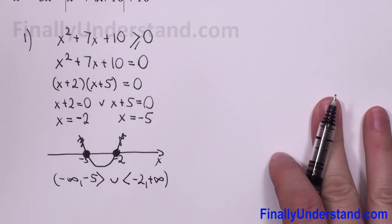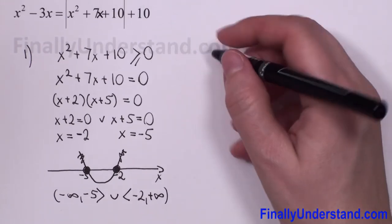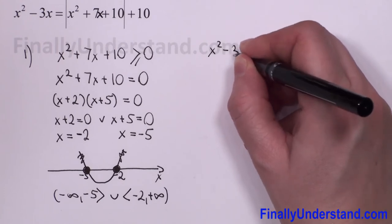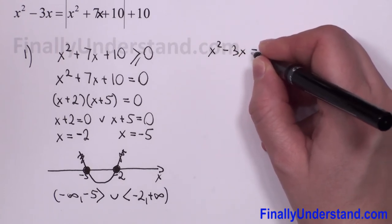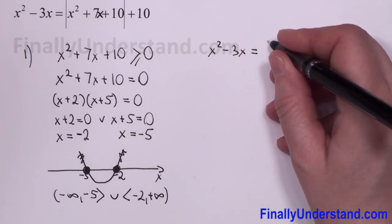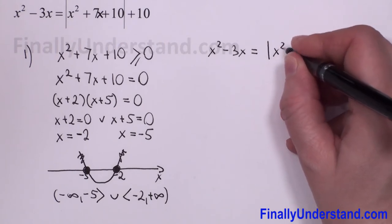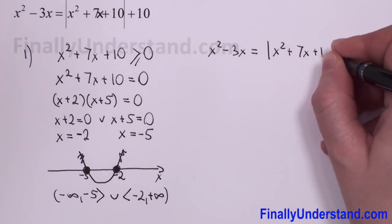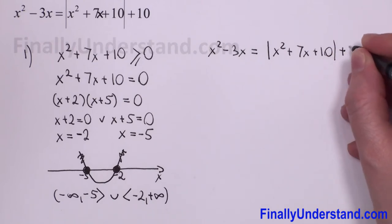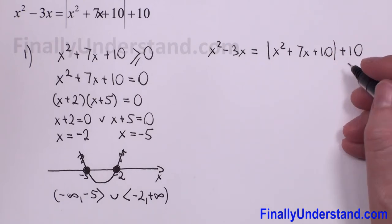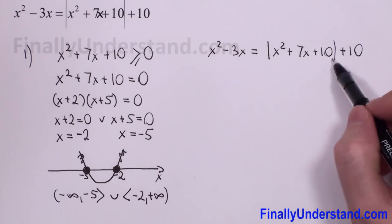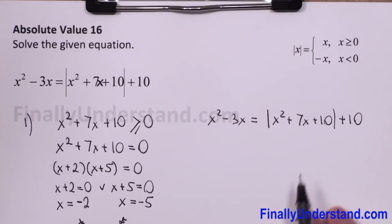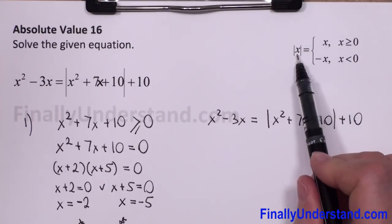Now we go to our equation. We have x squared minus 3x equals the absolute value of (x squared plus 7x plus 10) plus 10. I'll collect all terms. When we get rid of the absolute value bars in Case 1, we just copy the expression between the bars.